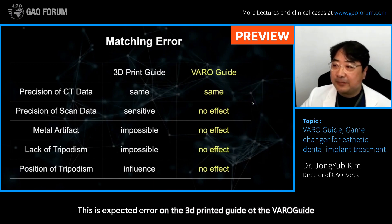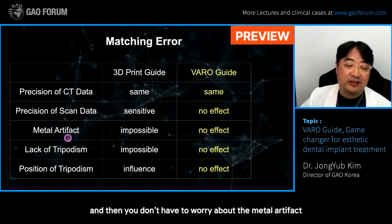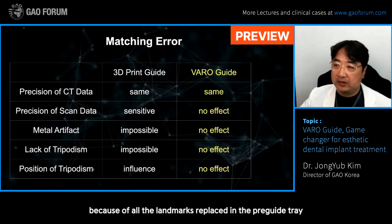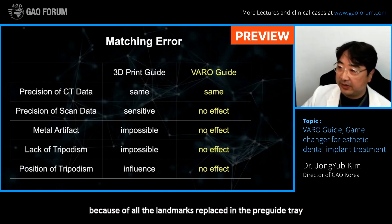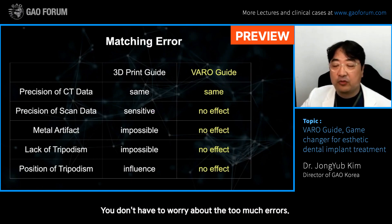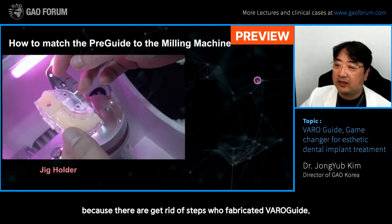These are the expected errors from the pre-printed guide versus the BaroGuide. With BaroGuide, you don't need scan data, so you don't have to worry about metal artifacts, the level of tripodism, or the position of tripodism — because all the landmarks are placed in the pre-guide tray. These are the advantages of BaroGuide: fewer error-prone steps in its fabrication process.